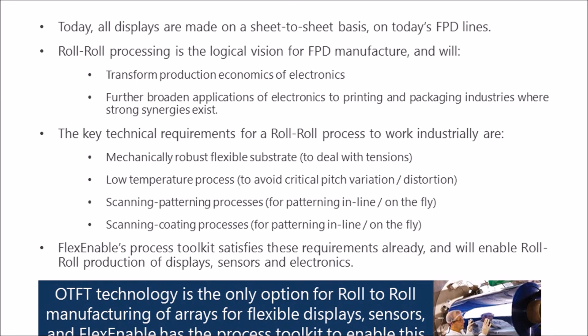In the future, OTFT will also enable a transformation in production economics. Today, all displays are made using a sheet-fed system, but the logical next step would be to make displays and electronics using a roll-to-roll process. The key to making a roll-to-roll process efficient is to use low temperatures and mechanically robust materials, which is why OTFT is the only option for roll-to-roll manufacturing. Furthermore, FlexEnable has already developed scanning approaches for patterning and deposition of materials, which will be key to making an efficient roll-to-roll process work.